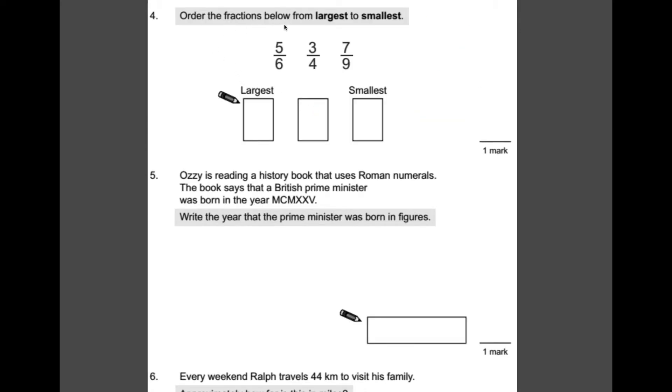Number 4, order the fractions below from largest to smallest. Similarly, with a question we had previously, we need to make sure that all of our fractions have the same denominator so that we can compare them properly. Now, at the moment, they're a mix. We've got sixths, we've got quarters, and we've got ninths. So, what we need to do is find a common multiple of all three of these numbers, so a number that's in the 6, the 4, and the 9 times table. One way you could do that if you're not sure is just to write out your times tables and then have a look and see which one is in all three.